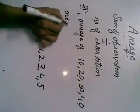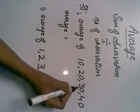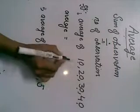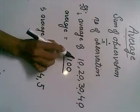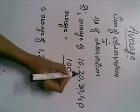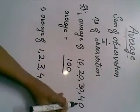So, the average is 10 plus 20 plus 30 plus 40 which is 100 divided by number of observations which is 1, 2, 3 and 4.